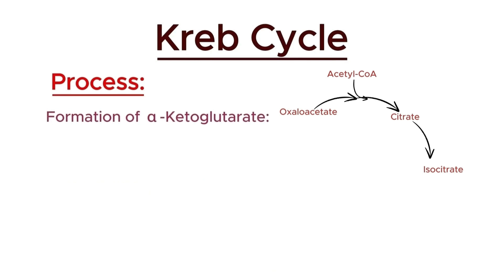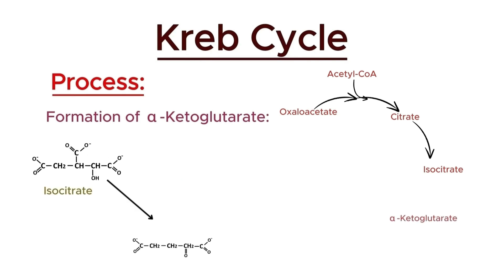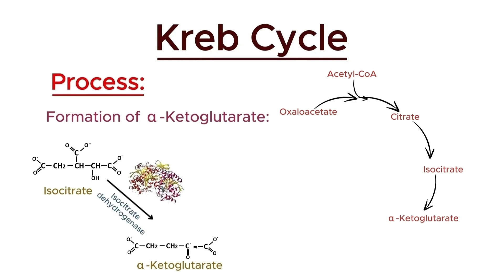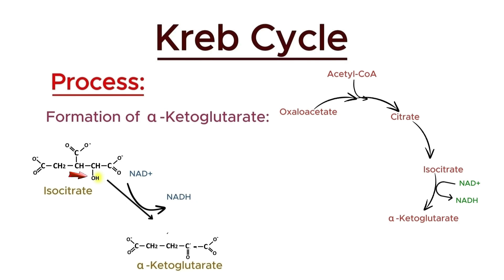In the third step of the Krebs cycle, isocitrate is oxidized and decarboxylated to form alpha-ketoglutarate. This reaction is catalyzed by the enzyme isocitrate dehydrogenase. During this step, isocitrate is oxidized, which converts NAD+ to NADH. The process also releases a molecule of carbon dioxide, resulting in the formation of alpha-ketoglutarate. This step is important as it generates NADH, which will be used in the electron transport chain to produce ATP.